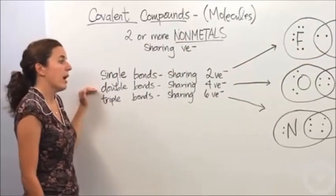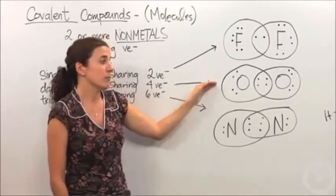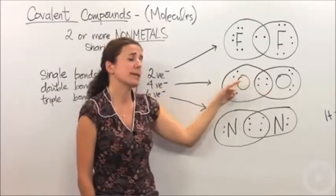Double bonds share four valence electrons with each other. Oxygen's a good example of a double bond. When oxygen bonds with itself, it shares four electrons, creating a double bond.